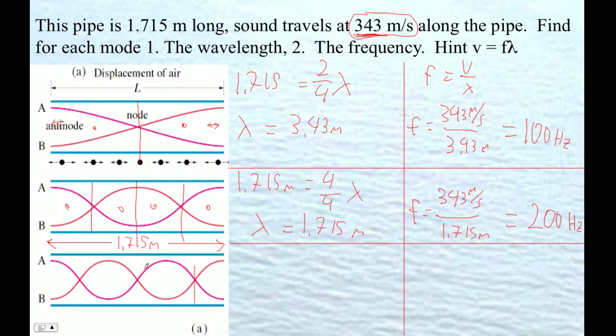So there's, let's divide this guy up. We've got 1, 2, 3, 4, 5, 6 quarters, just like we had with the string. 1.715 meters is six-quarter wavelengths. So therefore, the wavelength is equal to...